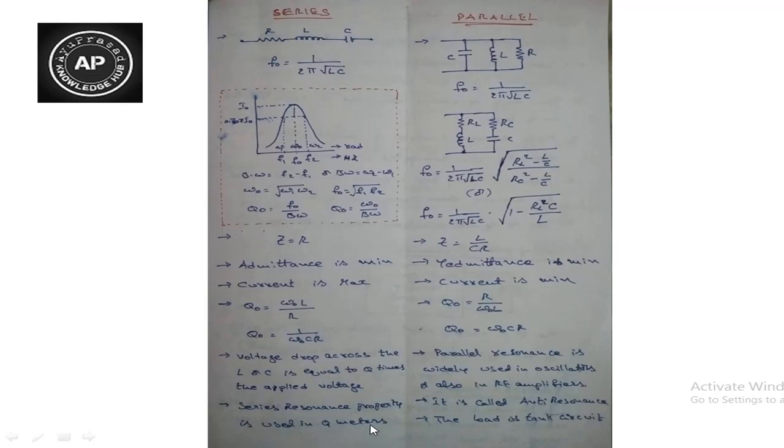Series resonance is used in Q meters or quality meters. Parallel resonance is widely used in oscillators and RF amplifiers. In oscillators, tank circuits are used. Parallel resonance circuits are also called anti-resonance circuits.